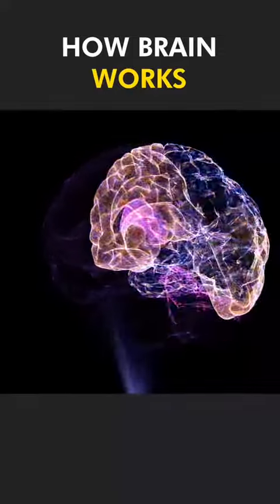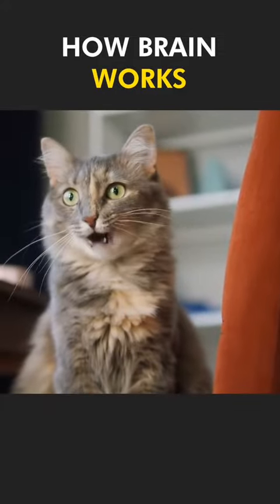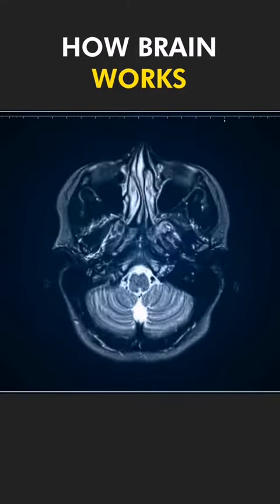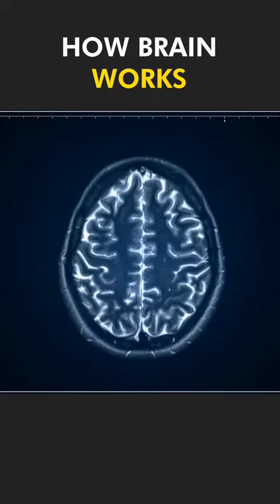Different parts of your brain handle different kinds of information. For example, if you see a cat, one part of your brain processes what it looks like, while another part remembers what a cat is.